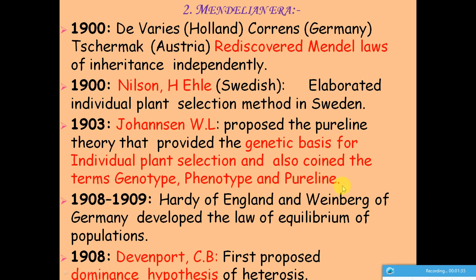Also in 1903, the law of population equilibrium concept was given, which plays a very important role in biometrical genetics. This concept helped explain the genetic composition and stability of populations over successive generations.